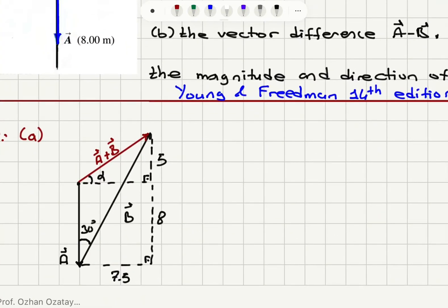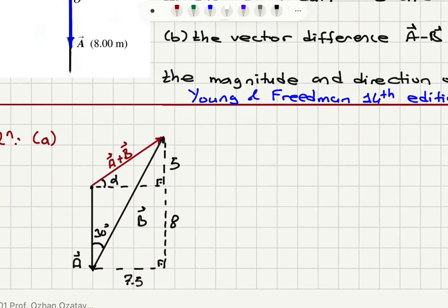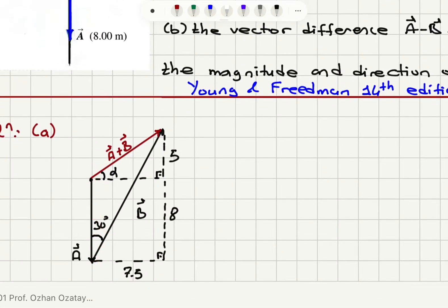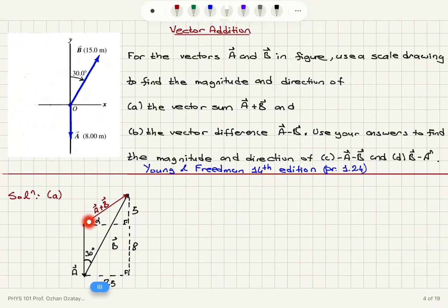To draw a plus b, we use the head-to-tail method. Here is vector a with magnitude 8 meters, and here is vector b with magnitude 15 meters making an angle of 30 degrees with respect to the positive y-axis. Drawing them head to tail, we obtain vector a plus b — from the head of vector a to the tip of vector b. To find its magnitude and angle alpha with respect to the positive x-axis, we can use the components of these vectors.